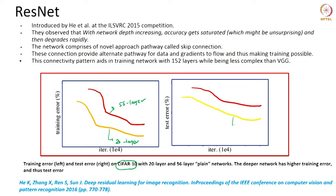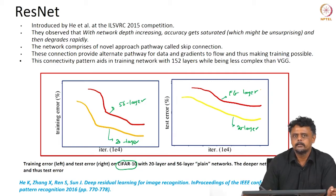Similarly for testing, the lower test error corresponds to the 20-layer network and the higher one corresponds to the 56-layer network. The problem with this picture is that general wisdom says that as you go deeper, your training and test error should improve because representations become better, you get better separability among classes, and non-linearities also increase. However, practically this does not seem to work that way — as you go deeper, there are issues with training and testing error.